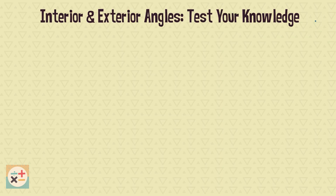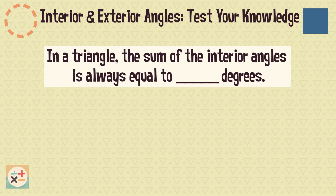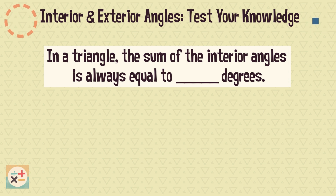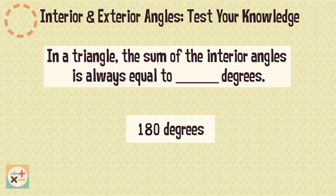Question 1. In a triangle, the sum of the interior angles is always equal to how many degrees? The answer is 180 degrees.